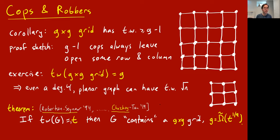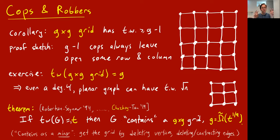There are converses to this: if you have a large tree-width graph it must contain some kind of embedded grid. First proved by Robertson and Seymour with not very good parameters, and subsequently improved, the most recent result is Chekuri and Chuzhoy 2019, which shows: if a graph has tree width t then it must contain a G-by-G grid as a minor, where G is roughly t to the 1/9. Containing as a minor means you can get the grid from your graph by deleting vertices, deleting edges, and contracting edges — the same sense as in Kuratowski's theorem for planar graphs. So having large grids inside you is exactly the barrier to having small tree width.